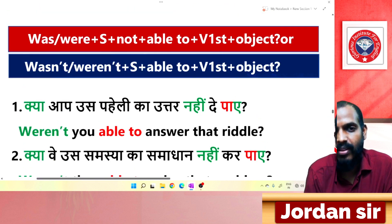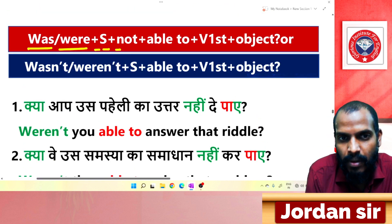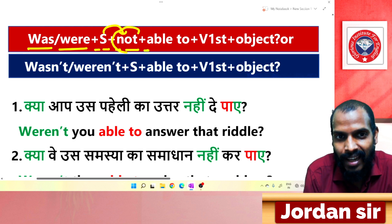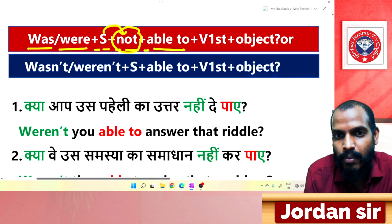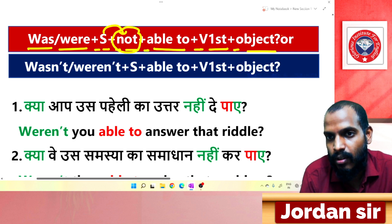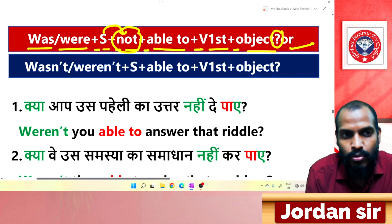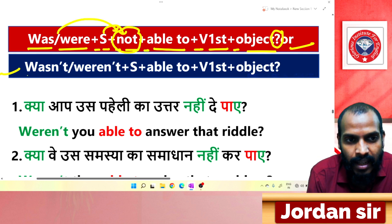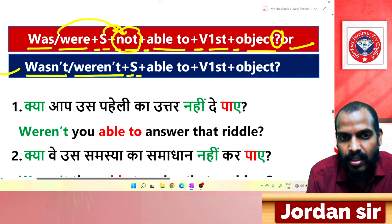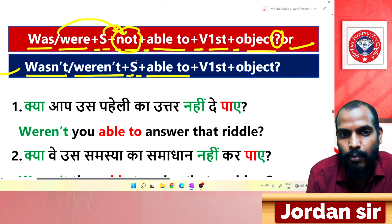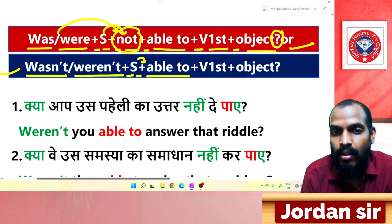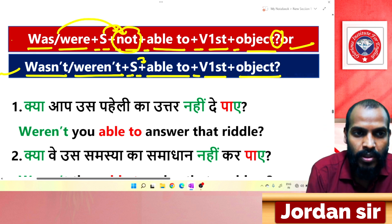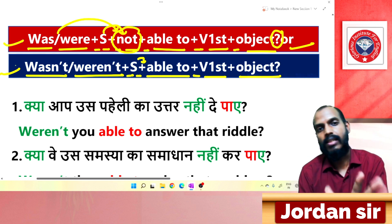For negative interrogative sentences, the structure is: Was/Were + subject + not + able to + verb (first form) + object + ? Alternatively: Wasn't/Weren't + subject + able to + verb (first form) + object + ? When using the contraction form (wasn't/weren't), you do not need 'not' after the subject. Both structures are acceptable.